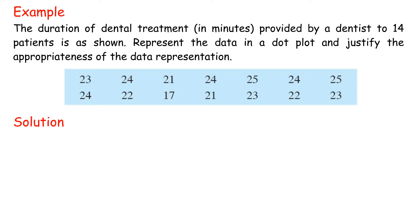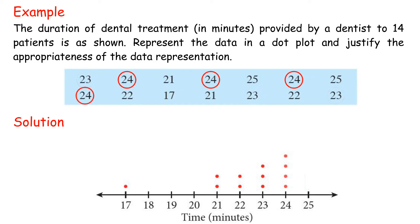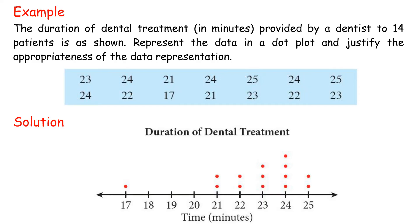Steps to construct a dot plot: draw a horizontal number line that covers the range of the given data, plot each individual data value with a dot above the number line, and write the title. This dot plot is suitable for displaying the duration of dental treatment, which ranges from 17 minutes to 25 minutes.